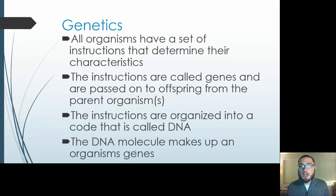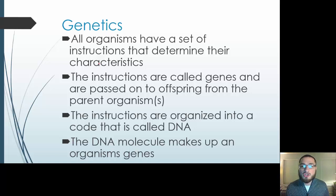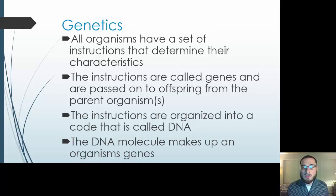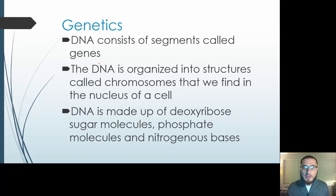It's important to understand that with genetics, we're talking about DNA — the instructions that make up who we are. All organisms have a set of instructions. They have a genome, they have genetics, and that's going to determine their characteristics. The instructions are called genes, and they're passed on to offspring from the parent organisms. The instructions are organized into a code, and that's what we call DNA. DNA consists of segments, and those segments are genes.